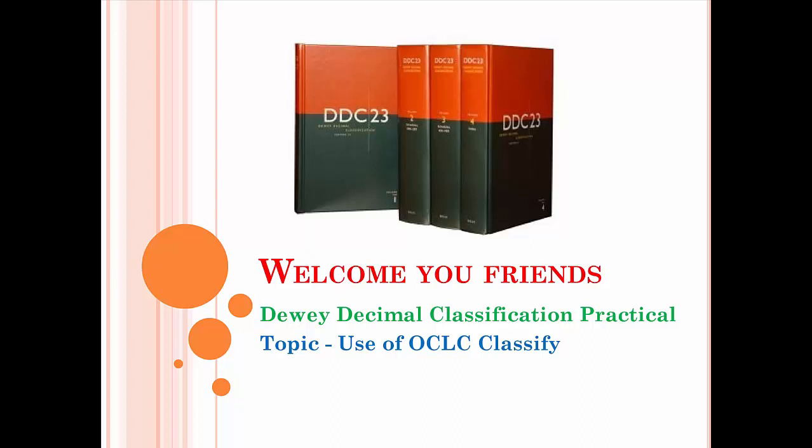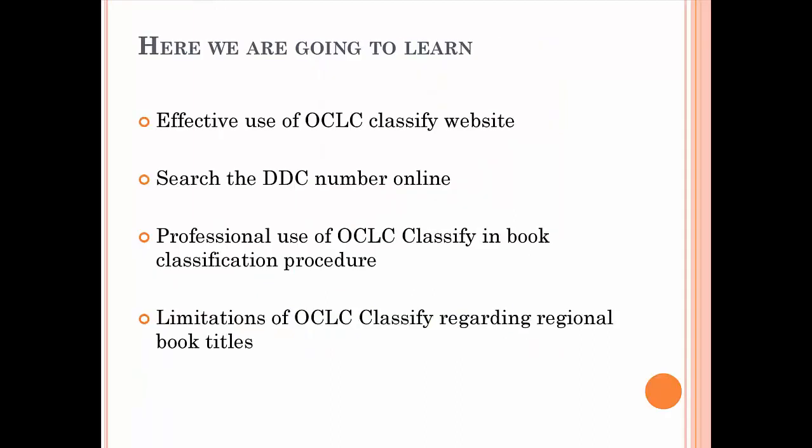As we all know, the 23rd edition of DDC is available in the market as well as online. All libraries must have those fat-sized DDC book sets available for reference, and many of us find it tedious to search and prepare classification numbers for each newly added book. Here we are going to learn the effective use of the OCLC Classify website to search DDC numbers online.